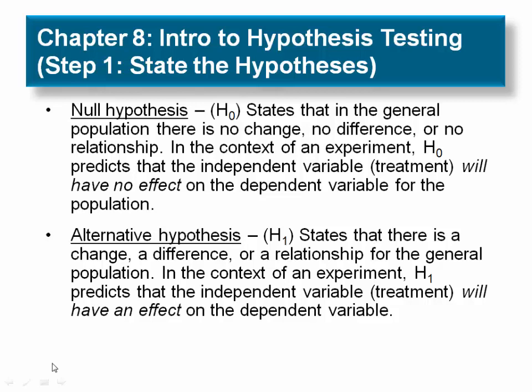In some circumstances, if previous research showed a result in a certain direction, it is appropriate for the alternative hypothesis to specify the direction of the effect. This type of hypothesis results in a directional hypothesis test.